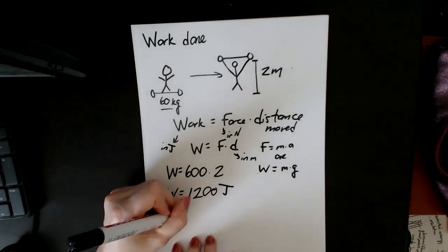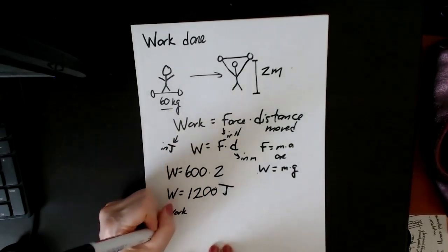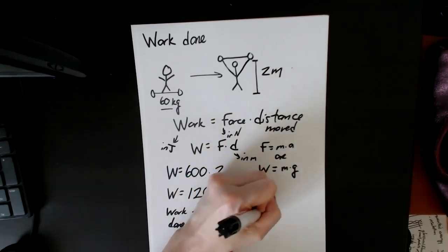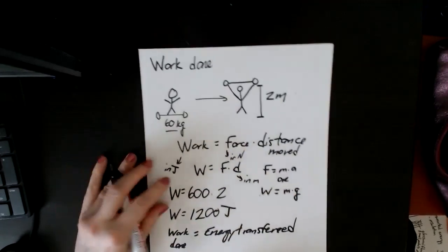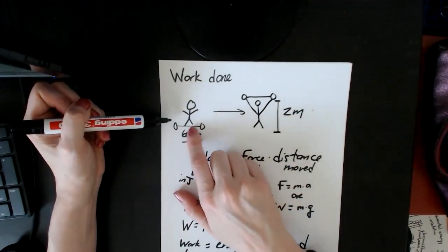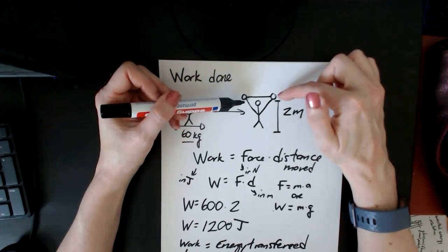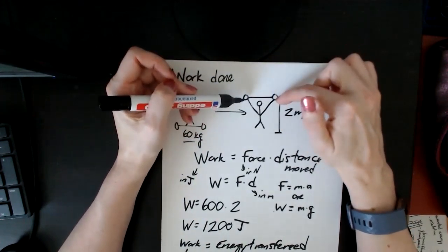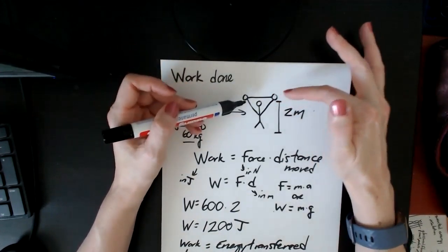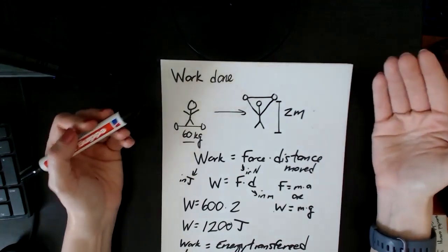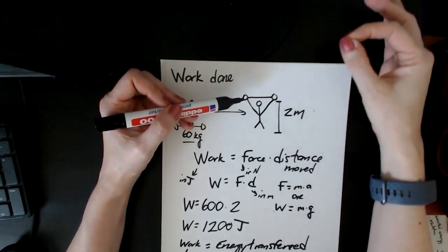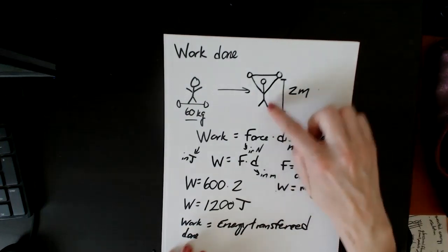So the work done on this object is the same as the energy that has been transferred to this object. And the reason I chose this example is because it should be obvious that this thing, first, it was lying on the ground, so it doesn't really have a lot of energy going for it. But if I lift it two meters up, I or some other stronger person than me, if you lift it up two meters, then now it's gained gravitational potential energy. Now it's above the ground, so it's gained potential energy. Well, where's that coming from? Remember, energy is never created or destroyed, so the gain in potential energy must have come from somewhere.